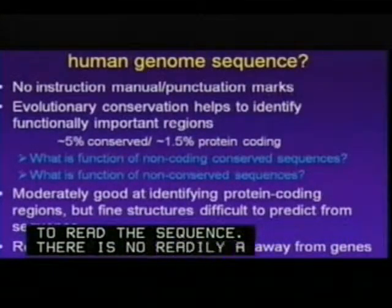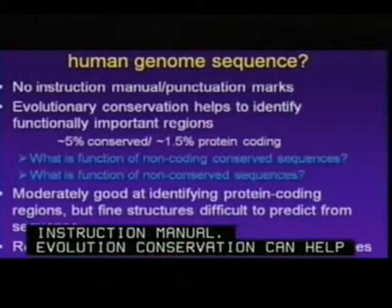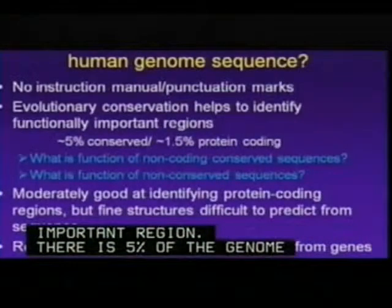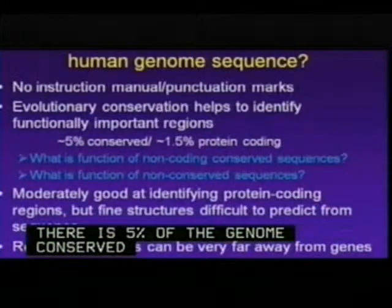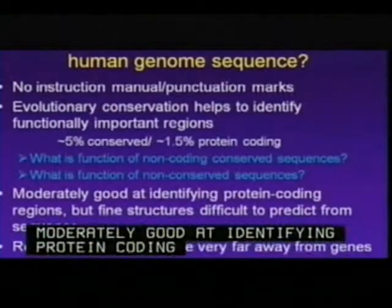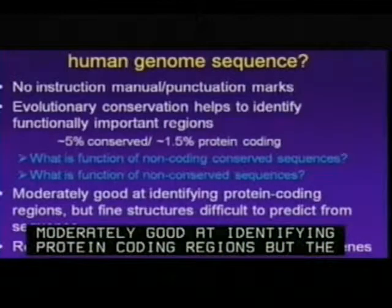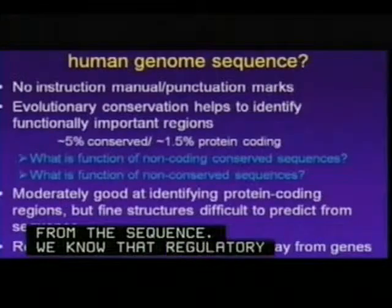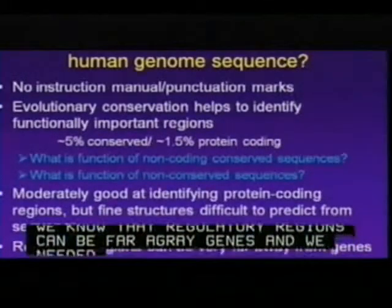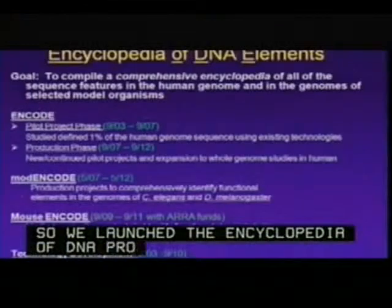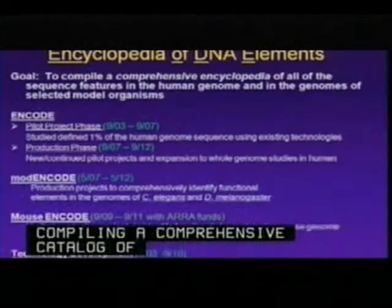Evolutionary conservation can help us identify functionally important regions. At least 5% of the genome is conserved, and about 1.5% is protein coding. We really want to know the function of non-coding conserved sequences, and even non-conserved sequences. We know regulatory regions can be very far away from genes, and we felt we needed an unbiased experimental investigation. So we launched the Encyclopedia of DNA Elements — the ENCODE project — with the goal of compiling a comprehensive catalog of functional elements in the human genome and the genome of model organisms.